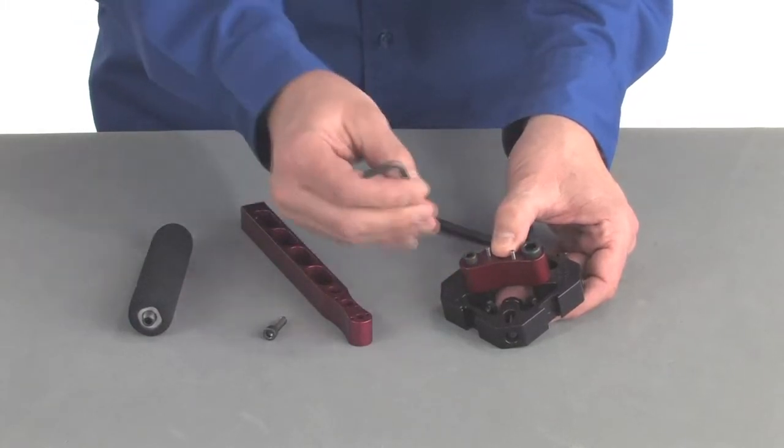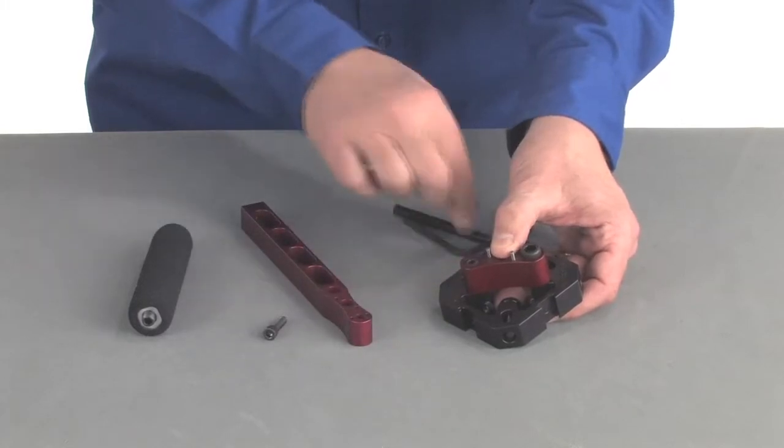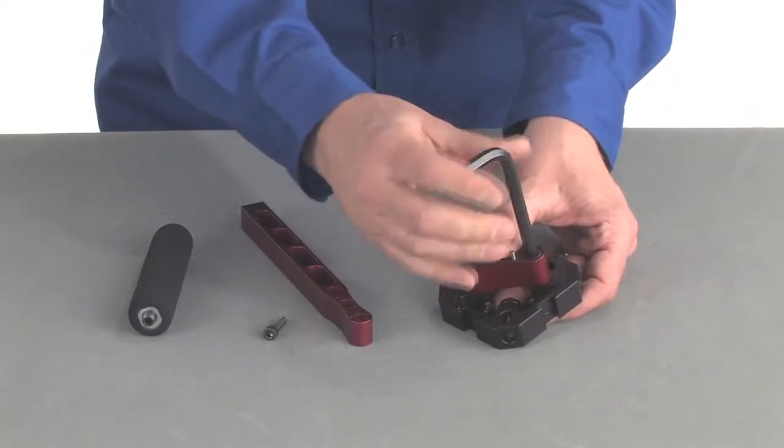Put both the bolts in. Small allen key tightens the little bolt. Big allen key tightens the big bolt.